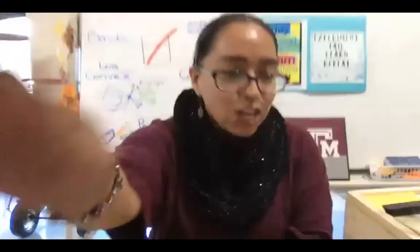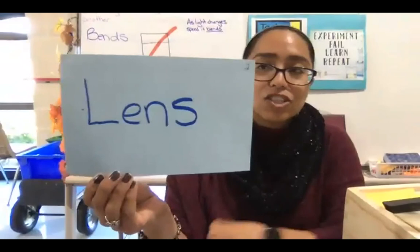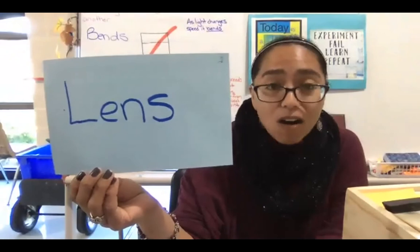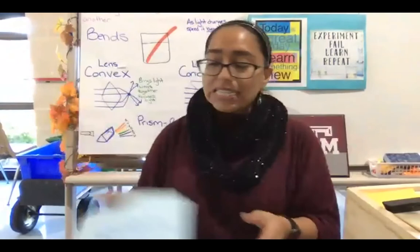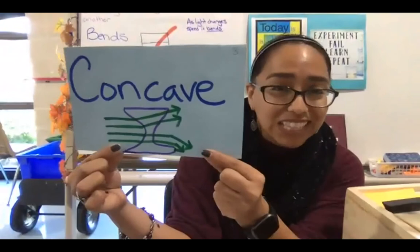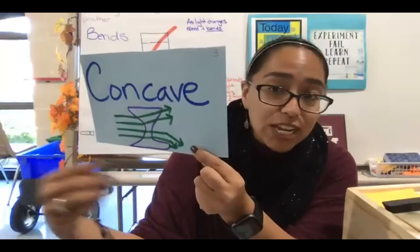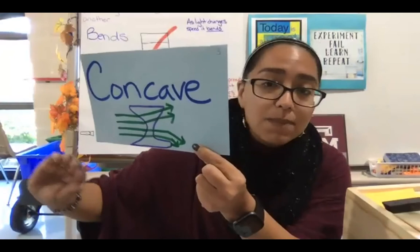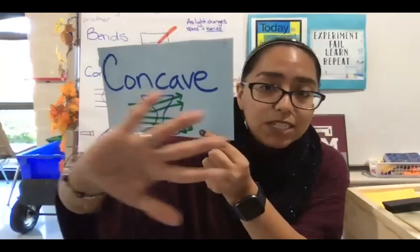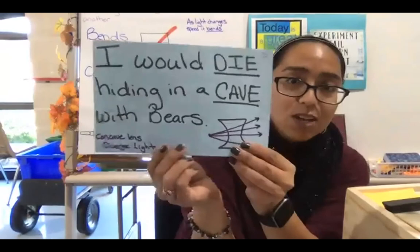Another refraction tool is lenses — curved transparent objects that refract light. The first type is concave. The edges are fat and the middle is skinny. When light passes through it, light is being diverged — spread apart. A memory trick: 'I would die hiding in a cave with bears' — 'die' stands for divergent, 'cave' stands for concave. Concave lenses diverge light. Like in the movie Divergent where people are put in different groups — divergent means to spread out or separate.